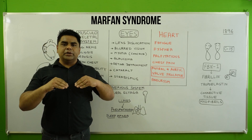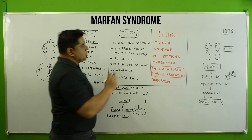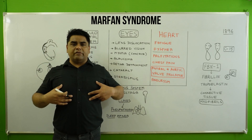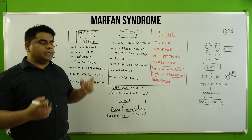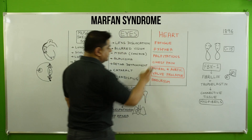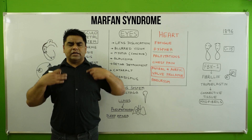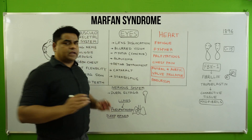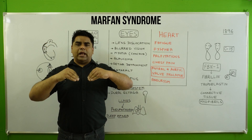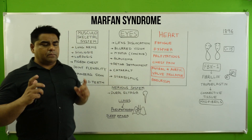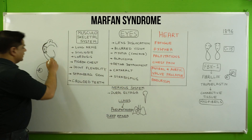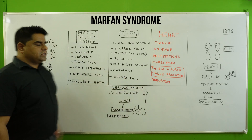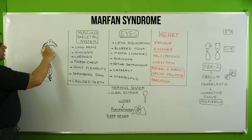Under the cardiovascular system, the heart valves will not be able to work properly due to their lost elasticity, causing fatigue. There is dyspnea — difficulty in breathing — because intercostal muscles and ribs also contain myofibrils. Chest pain and palpitations will be present. Mitral and aortic valve prolapse is a very important feature — blood can regurgitate from the left ventricle back into the left atrium. Aneurysm, a balloon-like bulge in the arc of the aorta, can also occur.